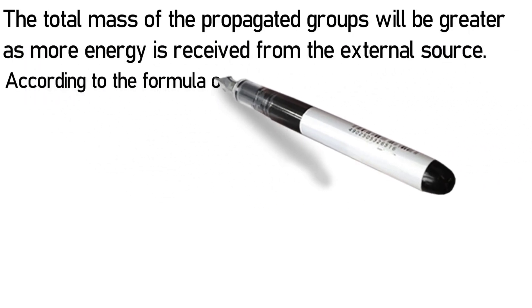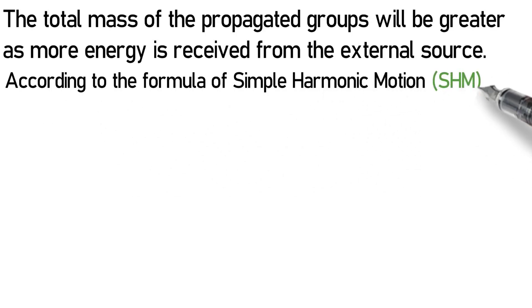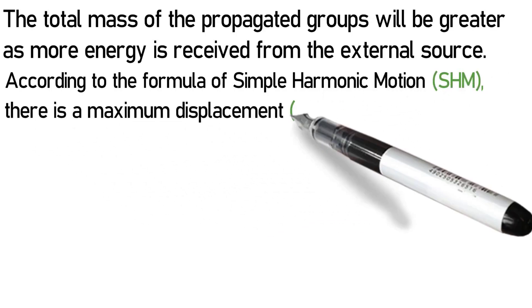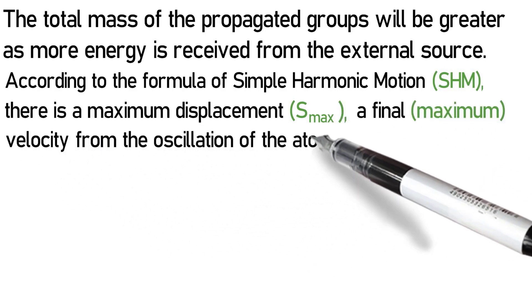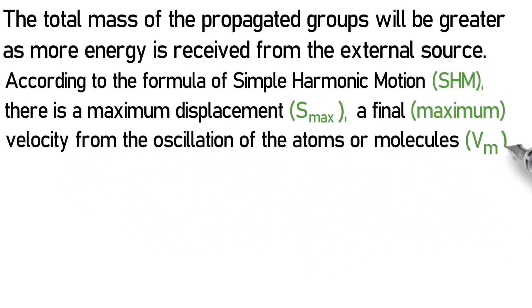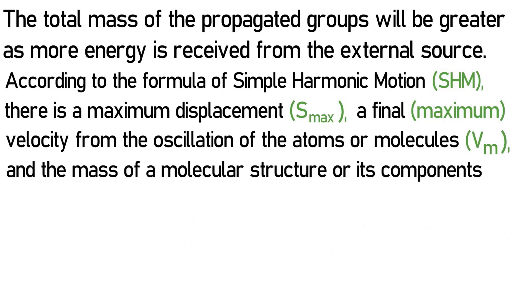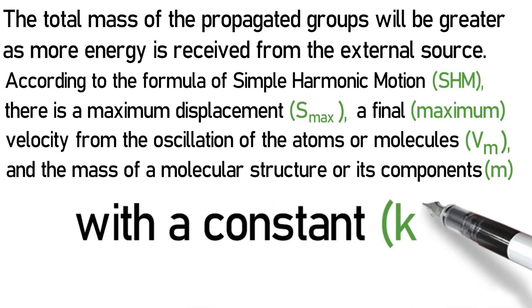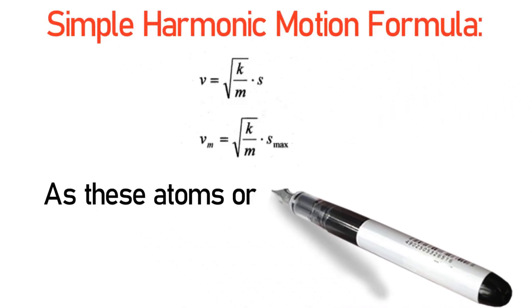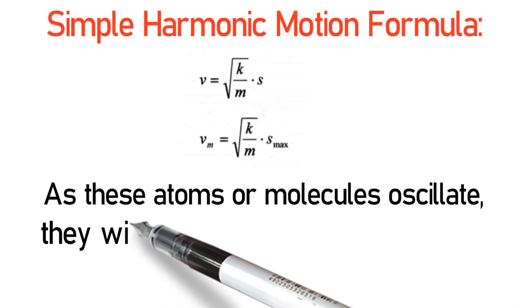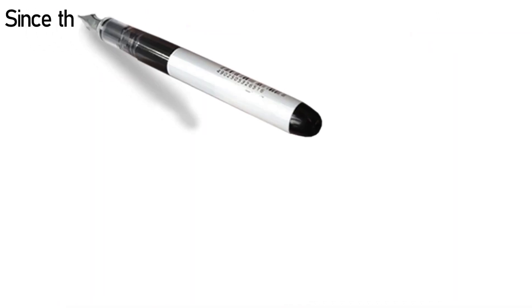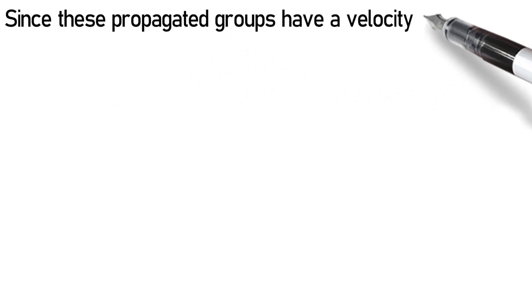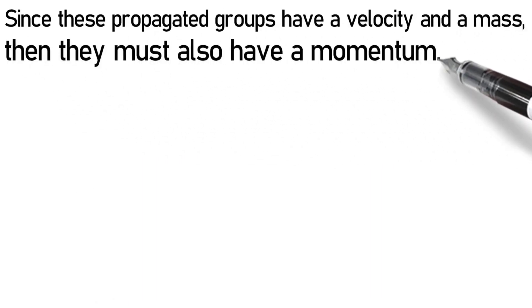According to the formula of simple harmonic motion, SHM, there is a maximum displacement, S max, a final maximum velocity from the oscillation of the atoms or molecules, Vm, and the mass of a molecular structure or its components, m, with a constant, k. As these atoms or molecules oscillate, they will launch propagated groups of Yaldins with a final velocity of Vp. Since these propagated groups have a velocity and a mass, they must also have a momentum.